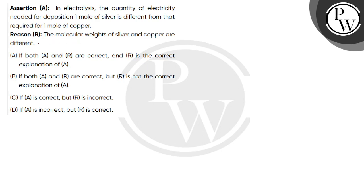So, first of all, the reason is true. The molecular weights of silver and copper are different. This is exactly right. If silver is about 108, then copper is about 63. So, both are different.